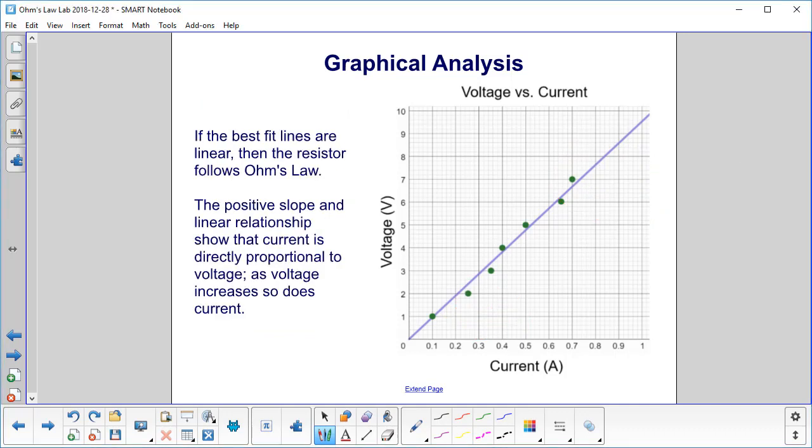If the best fit lines are linear, and they can be drawn pretty nicely here, this is pretty good, pretty much a straight line, then the resistor follows Ohm's law. The positive slope and linear relationship show that current is directly proportional to voltage. As voltage increases, so does the current.